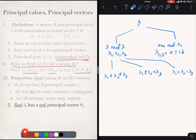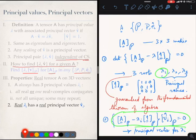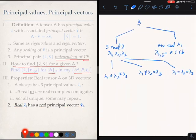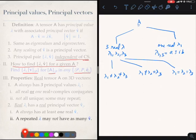For each choice of lambda, you could solve this equation for a principal vector. That means for every real lambda, there is a real principal vector V. What that means is that you will always have at least one real V, because you are guaranteed at least one real principal value.